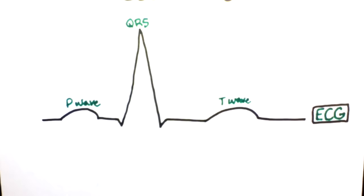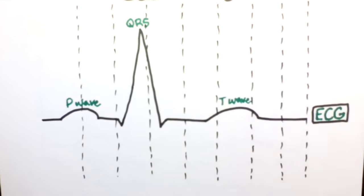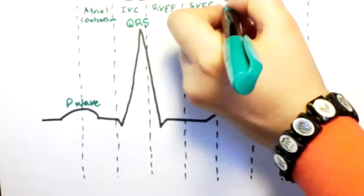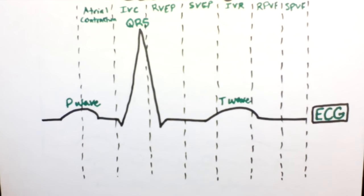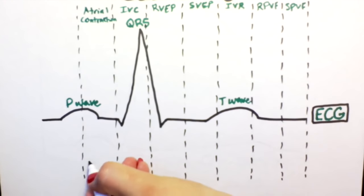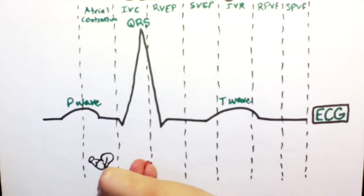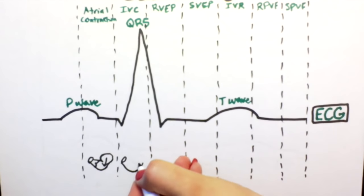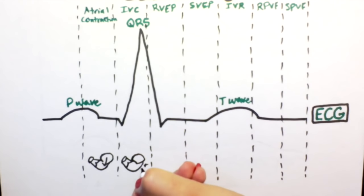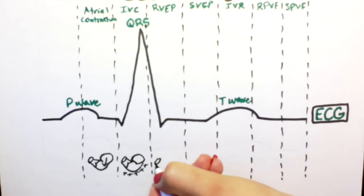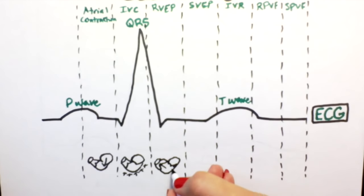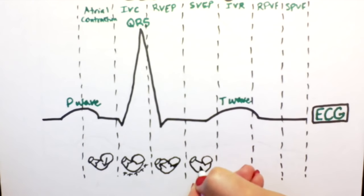In the last video, we talked about the seven different phases of the cardiac cycle and saw what happens in the atrium and the ventricle. The first phase is called the atrial contraction phase, when the mitral valve is open and blood rushes into the ventricle. The next three phases are the isovolumetric contraction phase, the rapid ventricular ejection phase, and the slow ventricular ejection phase, when the ventricle is contracting and pumping blood into the aorta.